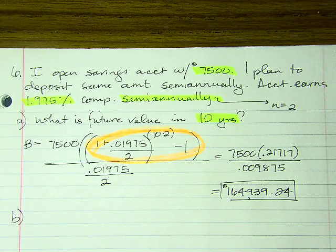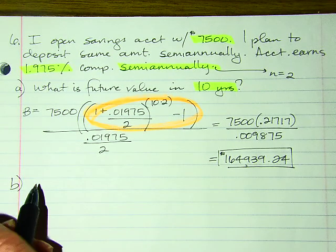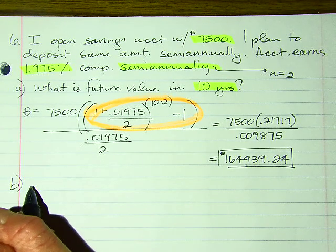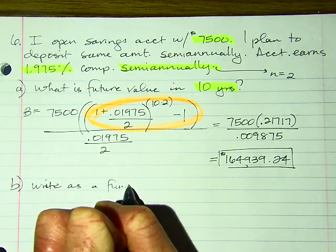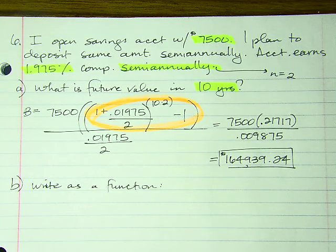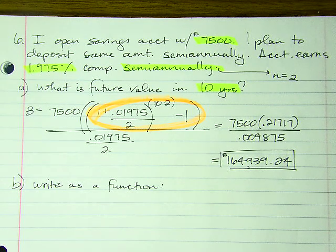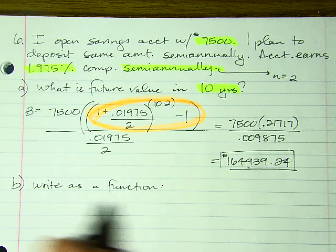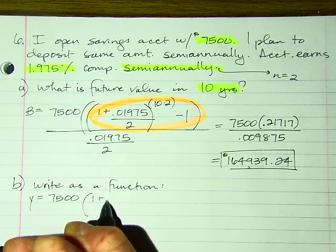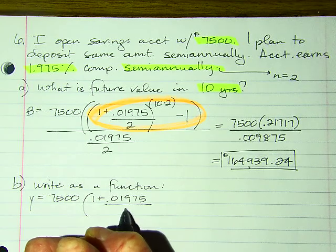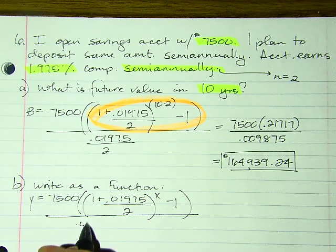Part B: write this as a function of x. If x equals time, I write the exact same problem but my x becomes the exponent — everything else remains the same.